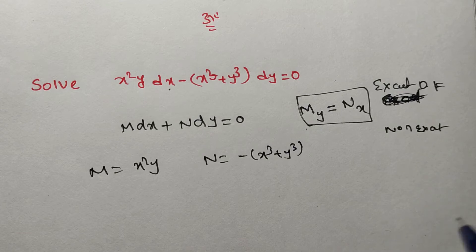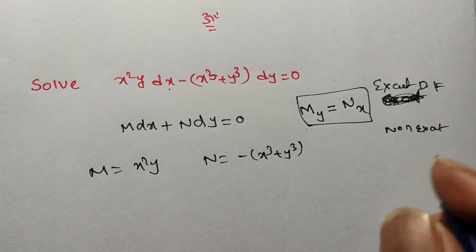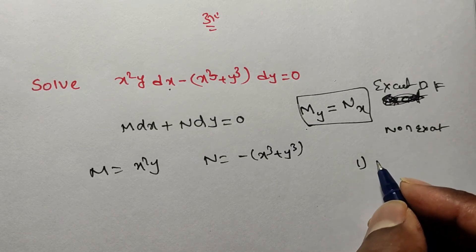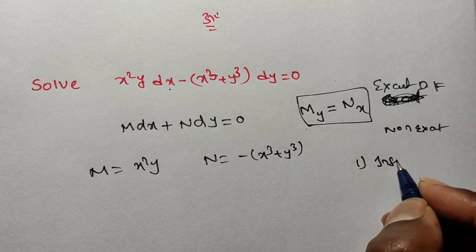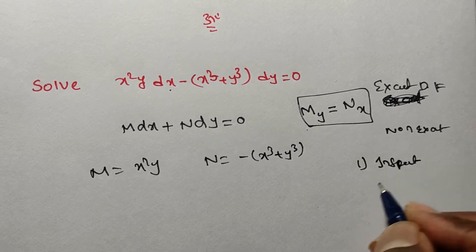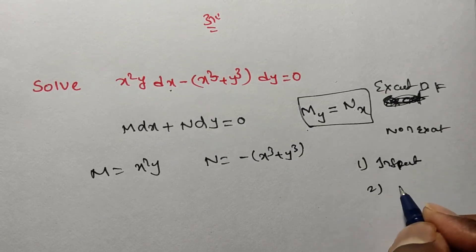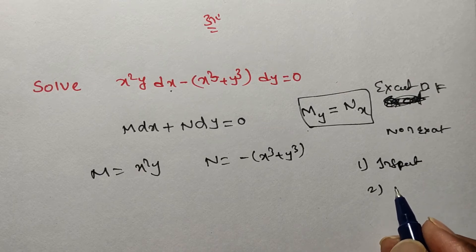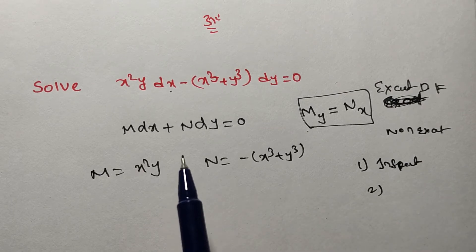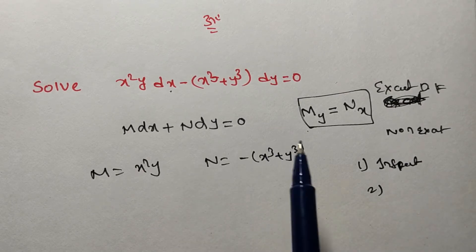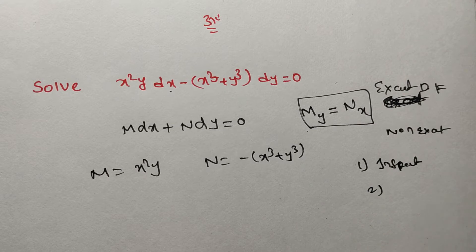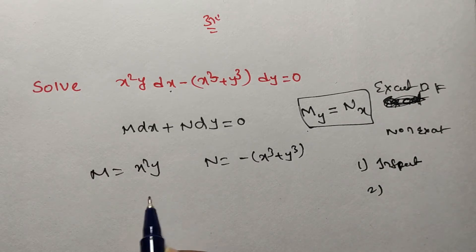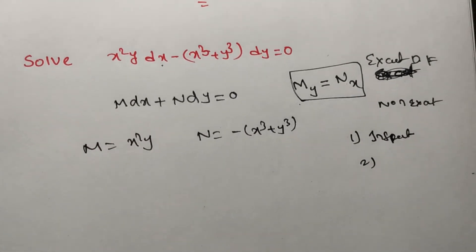If it is non-exact, we have different methods. The first method is the inspection method. The second method: if the equation M dx + N dy = 0 is homogeneous and Mx + Ny ≠ 0, then 1/(Mx + Ny) is an integrating factor. Now I am going to solve this problem.